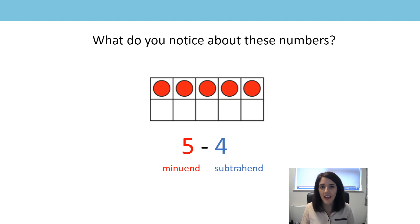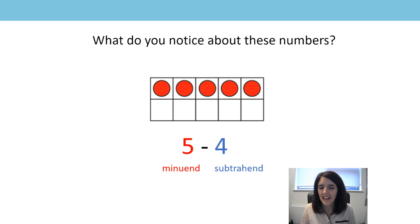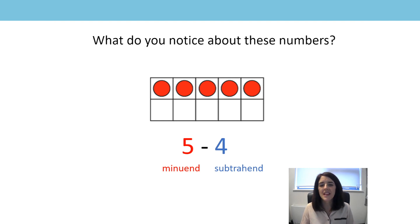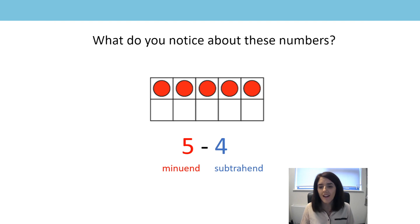I have five counters and I subtract four. How many counters am I going to have left? Don't count back — what do we notice about those numbers? Five and four. I can hear lots of you say that they're consecutive numbers. Five and four are consecutive numbers because they sit next to each other on the number line. Four is one less than five, so there must be one left over.